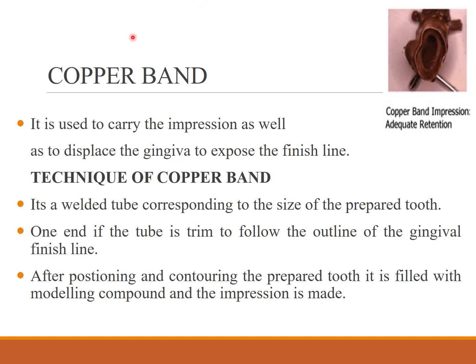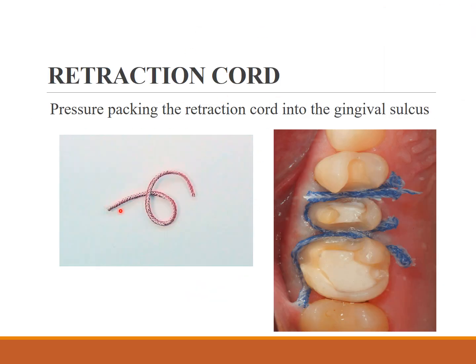Methods of gingival retraction include mechanical, chemical, and surgical methods. In the mechanical method, the copper band is used to carry the impression as well as displace the gingival tissue to expose the finish line. A welded tube corresponding to the size of the prepared tooth is trimmed to follow the outline of the gingival finish line, then filled with modeling compound and an impression is made.